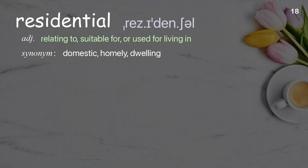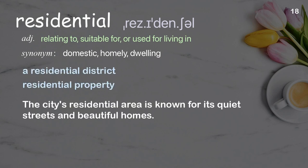Residential: relating to, suitable for, or used for living in. Examples: a residential district; residential property; the city's residential area is known for its quiet streets and beautiful homes.